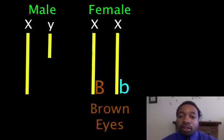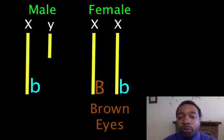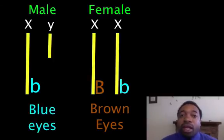Now let's say we have a male that on his X chromosome has the little b. And there's no gene for eye color on the Y chromosome. So this person is going to have blue eyes. This male is going to have blue eyes.